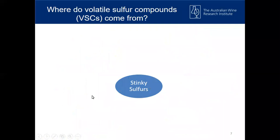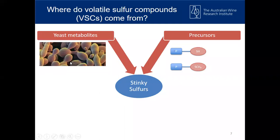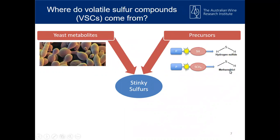So where do these compounds come from? The main source of volatile sulfur compounds is yeast metabolism — they're produced early during fermentation, which is why it's so important to choose the correct yeast. But once your wine is finished and in bottle, the formation of these compounds is mainly determined by the concentration of precursors in your wine — any compound that's got a sulfur moiety that can be released through chemical switches or chemical drivers to produce hydrogen sulfide or methanethiol.